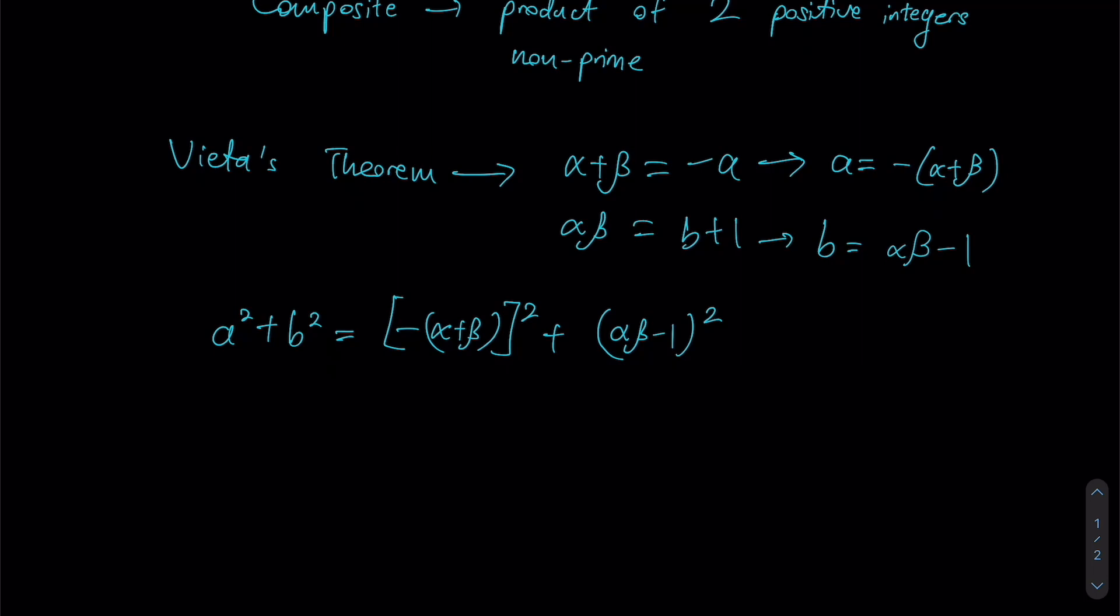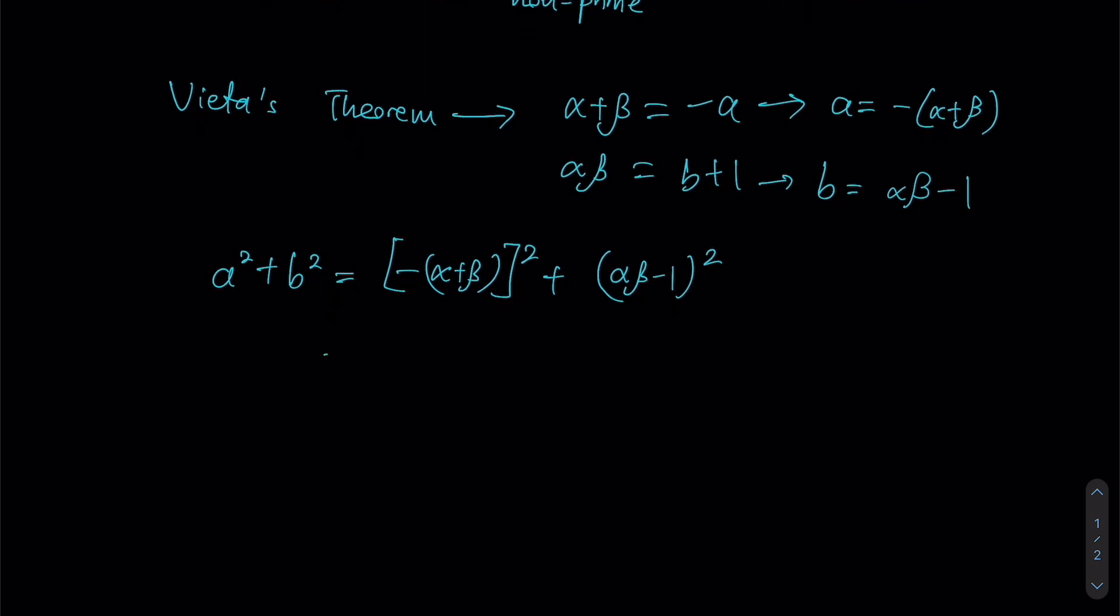Now we have no choice but to expand this and see what that gets us. Since we have a negative sign within the square, once squared it becomes a positive number, so we just need to square the expression inside, which will give us this identity that we know. For our second square we have alpha² beta² minus 2 alpha beta plus 1, because this is of the form a² minus 2ab plus b².